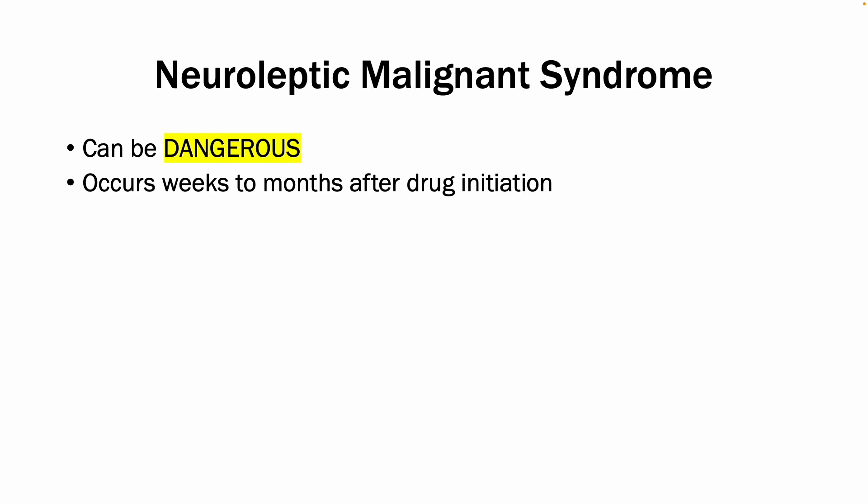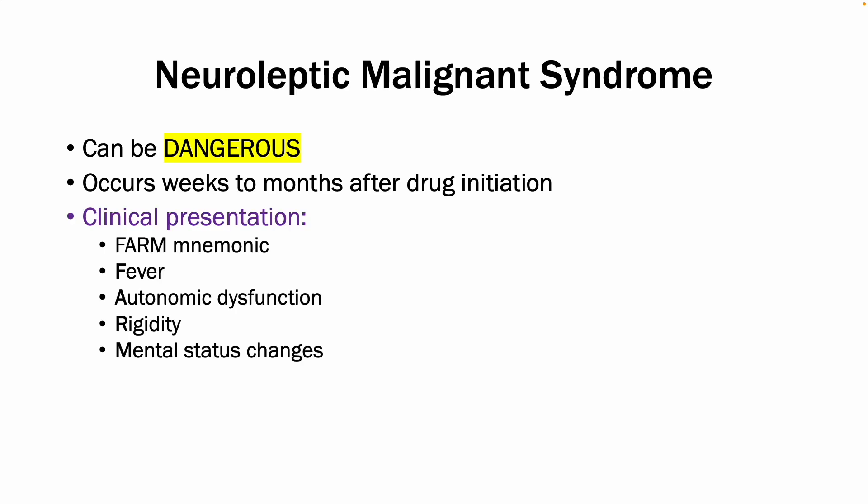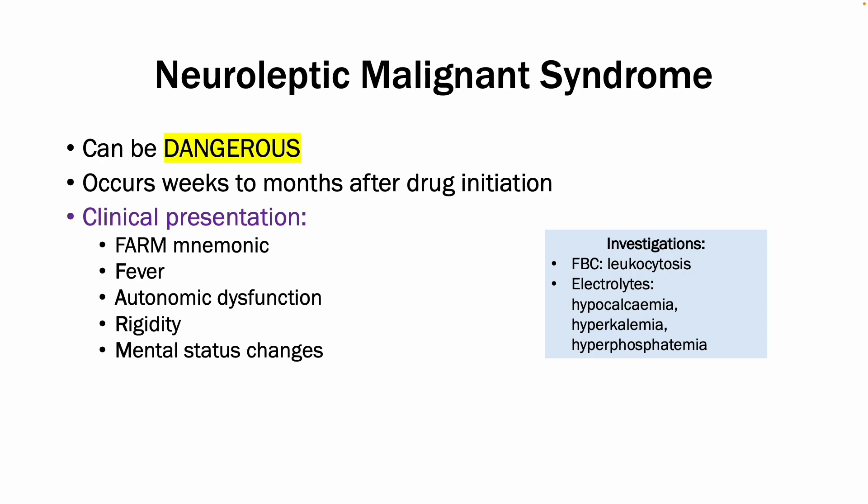This causes the typical clinical presentation of autonomic dysfunction, fever, muscle rigidity, and mental status changes. In terms of investigations, you would see leukocytosis, and in terms of electrolytes most importantly you would see hypocalcemia — because calcium has been released into the peripheral muscles — as well as hyperkalemia and hyperphosphatemia.